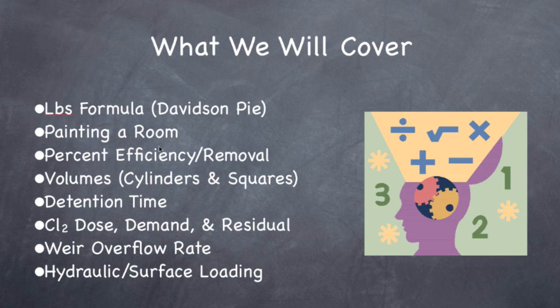We are going to paint a room. We are going to do percent efficiency and percent removal, which are both exactly the same. We're going to find volume of cylinders like a clarifier and squares like an aeration basin.